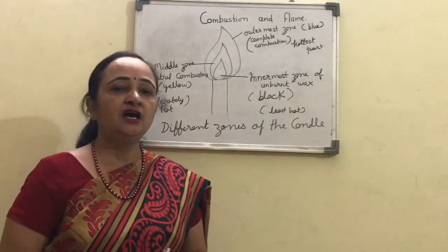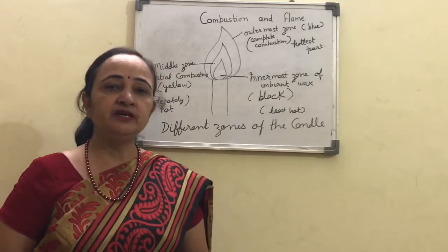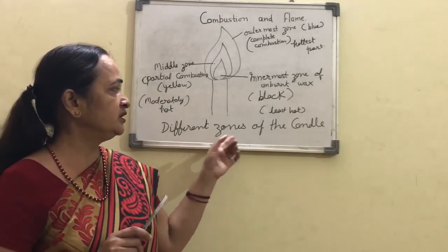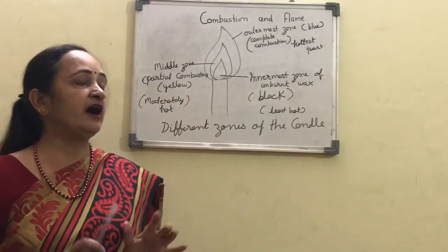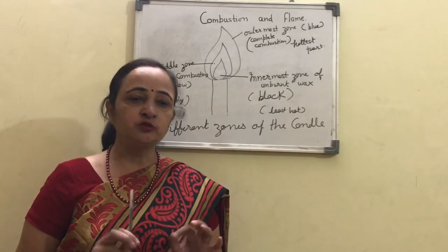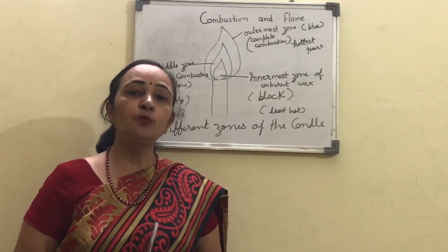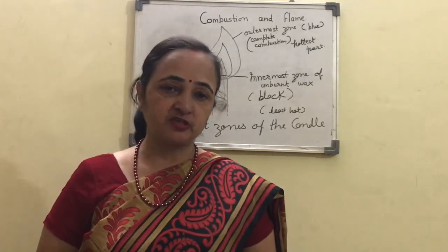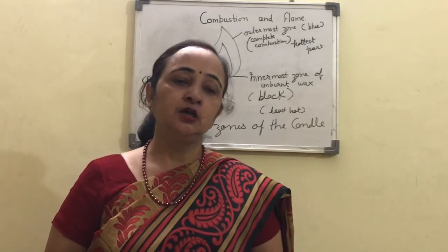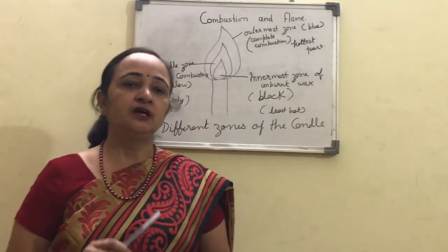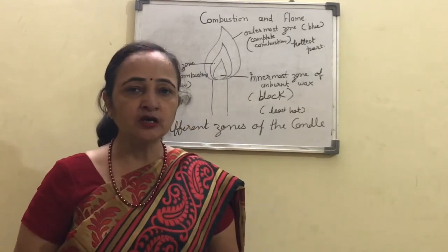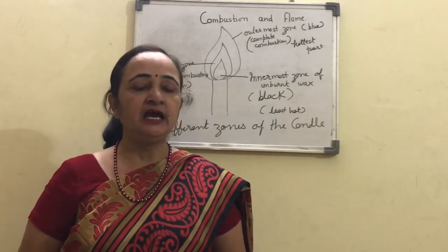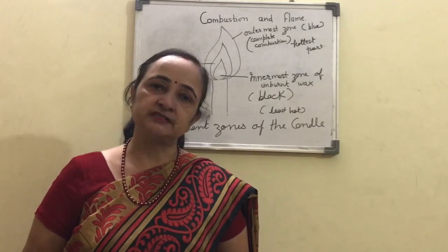Today you should revise this — read the NCERT book and go through the activities and you will be able to understand clearly. Remember that both questions are very important: what is the structure of the different zones of the candle, and why does the goldsmith blow the outermost zone of a candle flame with a metallic blow pipe for melting gold and silver. This can come as a 'give reasons' question. In the next class, we will study about fuels.